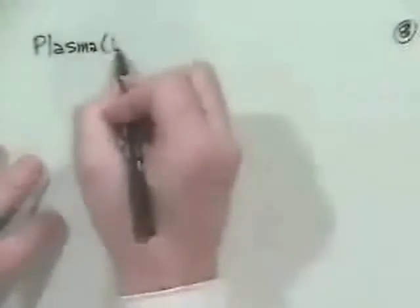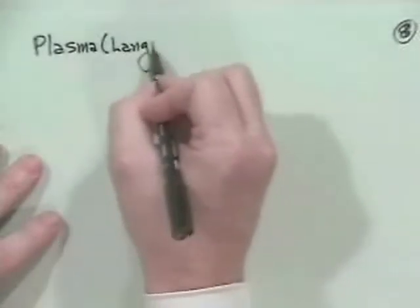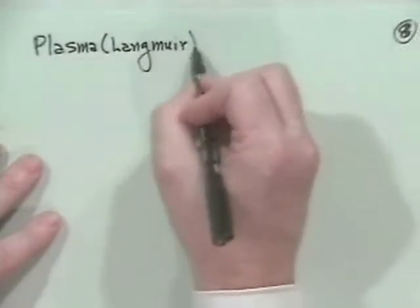Okay, what we want to now go on to is what's called a plasma or Langmuir probe. This is kind of an important thing for understanding edges of plasmas and so forth. So let's talk about a plasma or what is often called a Langmuir probe.